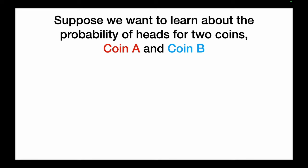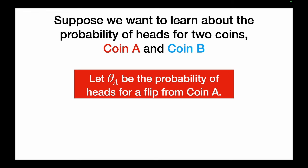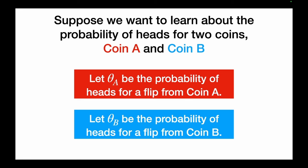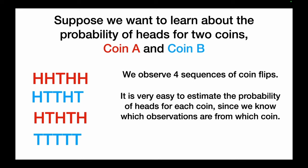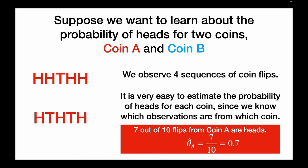Suppose we want to learn about the probability of heads for two biased coins, coin A and coin B. Let theta_A be the probability of flipping heads for coin A, and let theta_B be the probability of heads for coin B. We observe four sequences of coin flips, two from A and two from B.